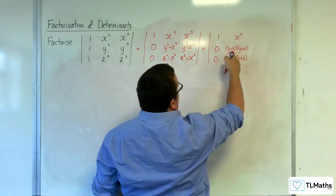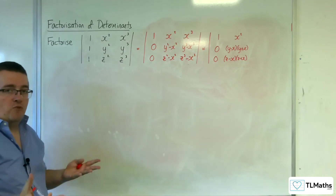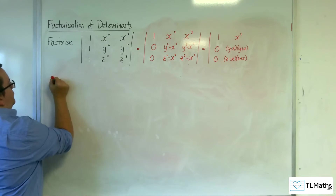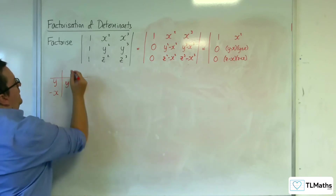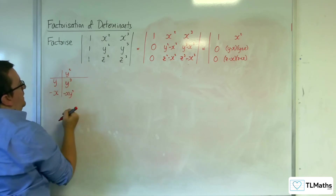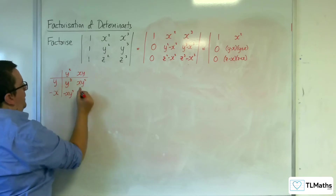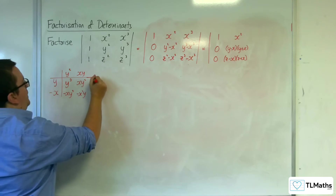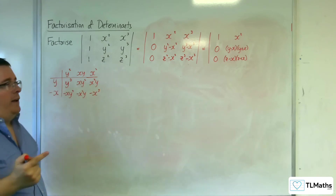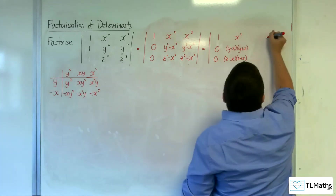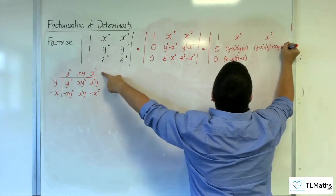Noting that (y − x) is a factor of y squared minus x squared, I'd also assume (y − x) is a factor of y cubed minus x cubed, but I need polynomial division to find the other bracket. Dividing y cubed minus x cubed by (y − x) gives y squared + xy + x squared. So y cubed minus x cubed equals (y − x)(y² + xy + x²). And similarly, z cubed minus x cubed equals (z − x)(z² + xz + x²).